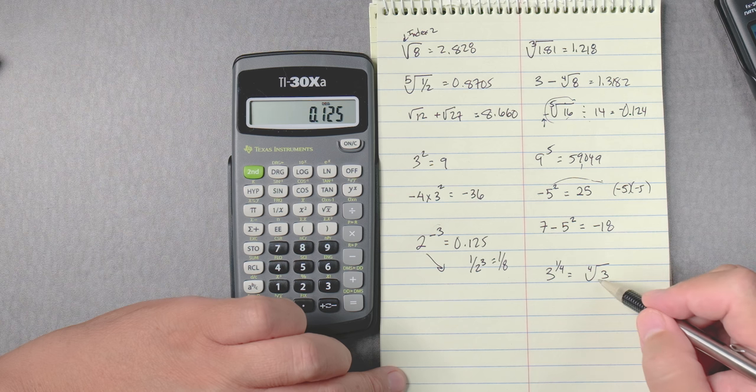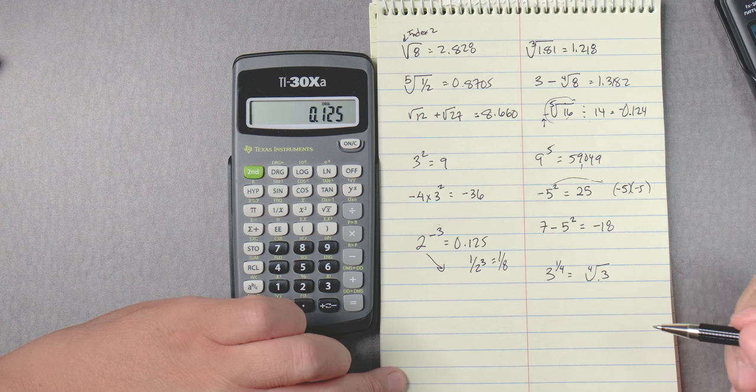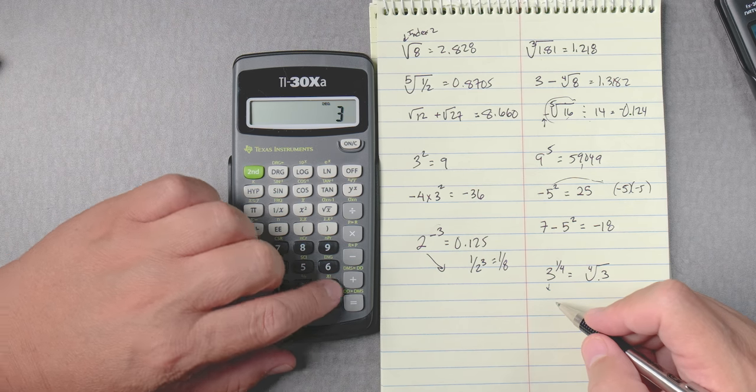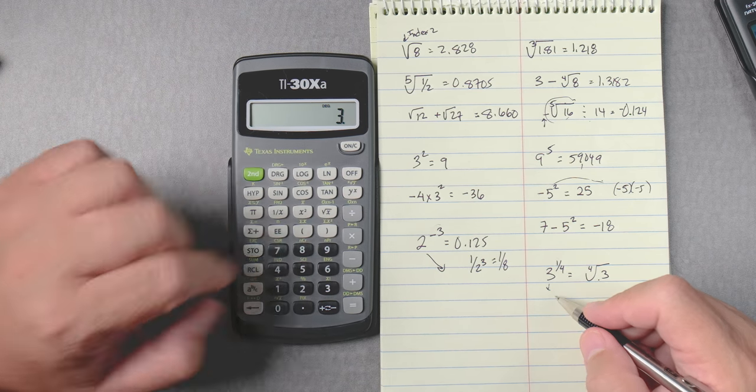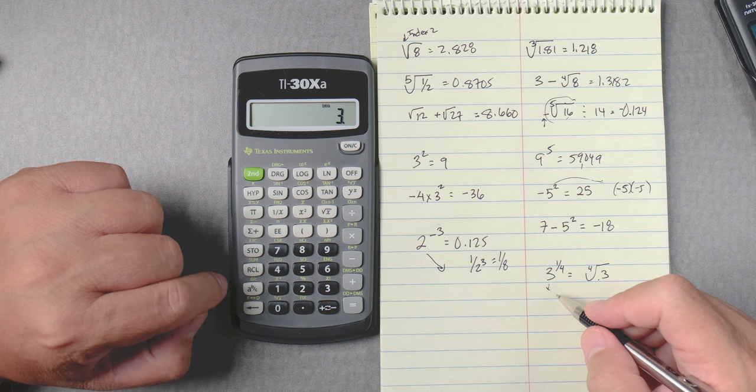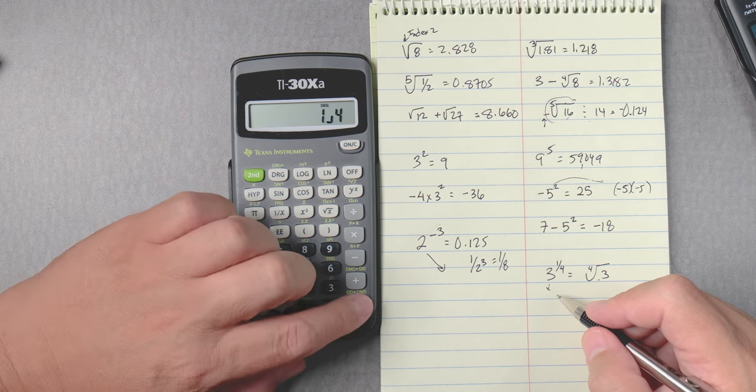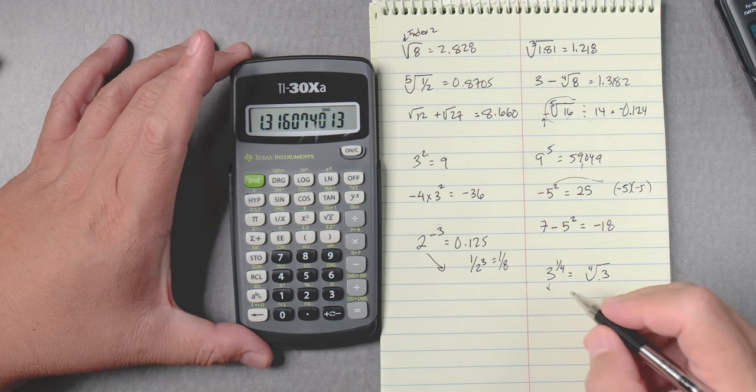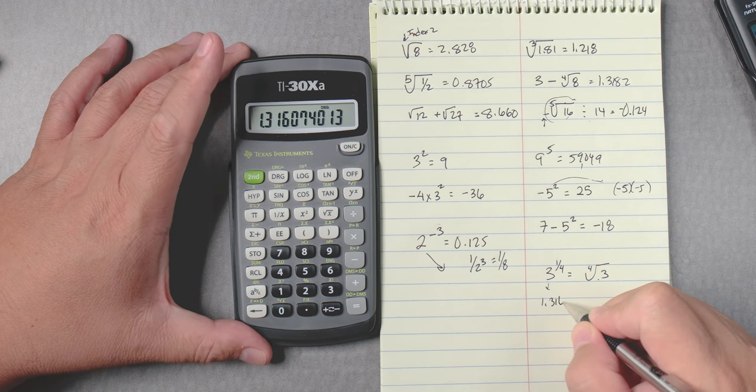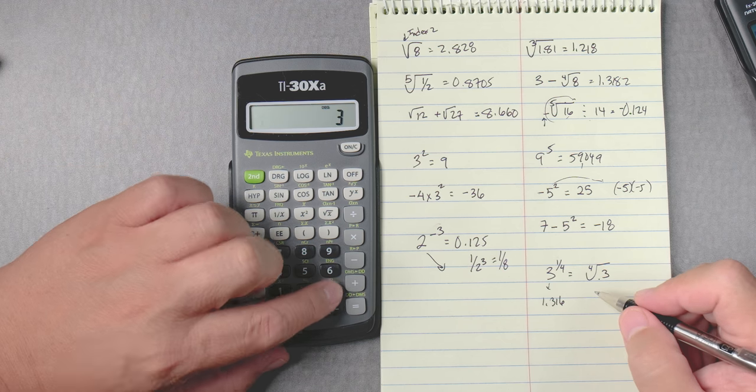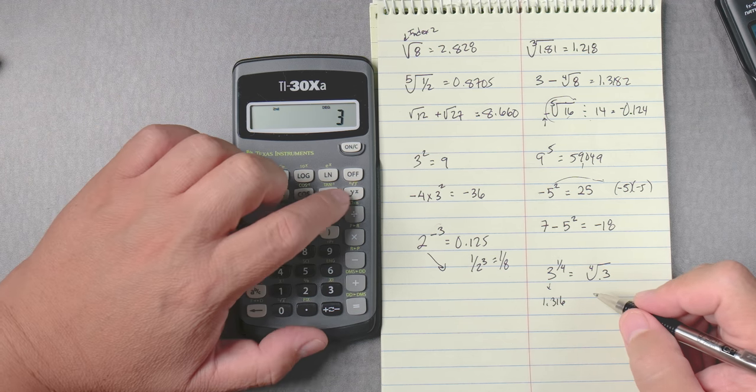Here we can do it either way. On this one we can go 3 y to the x, 1 abc 4 equals, that gives you 1.316.